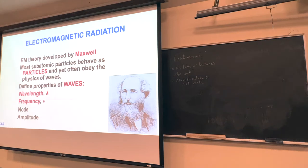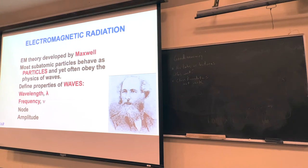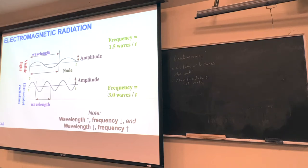Waves also have nodes and amplitudes. In our class I'm going to focus heavily on wavelength and frequency. Wavelength is often denoted by lambda — it looks like an upside-down y, a Greek character. Frequency gets the Greek symbol nu — it looks like an italicized v. Here are two waves: the top one represents a visible light wave and the bottom one represents an ultraviolet wave. A wavelength is literally a distance from where the wave begins to where it ends.